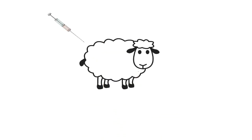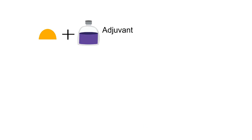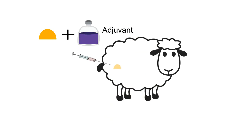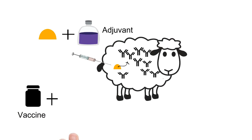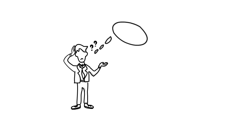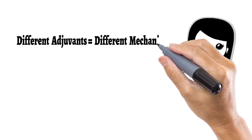If an antigen with very low immunogenicity is injected into an animal, it will produce a very poor immune response, and immunological memory may not be generated against it. Such a low immunogenic antigen, when mixed with a chemical called an adjuvant and then injected into a lab animal, has its immunogenicity drastically increased. Therefore, many vaccines, which are inactivated antigenic preparations, are mixed with adjuvants. Different types of adjuvants use different mechanisms to achieve this.